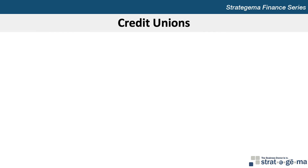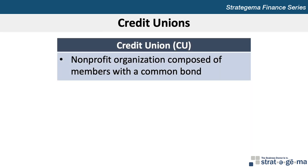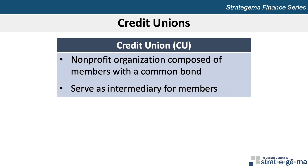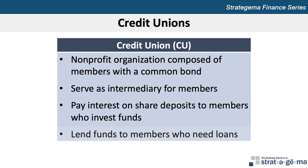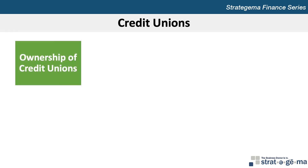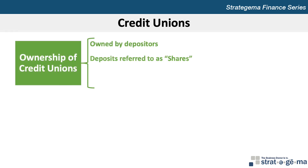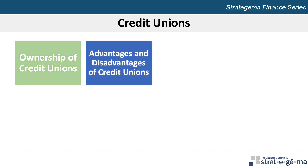Credit unions are non-profit organizations composed of members with a common bond, such as an affiliation with a particular labor union, church, university, or residential area. Their objective is to serve as an intermediary for those members. Because CUs don't issue stock, they're technically owned by depositors; deposits are called shares and interest paid is called a dividend. Because CUs are non-profit organizations, their income isn't taxed, giving them an advantage over other types of financial institutions.